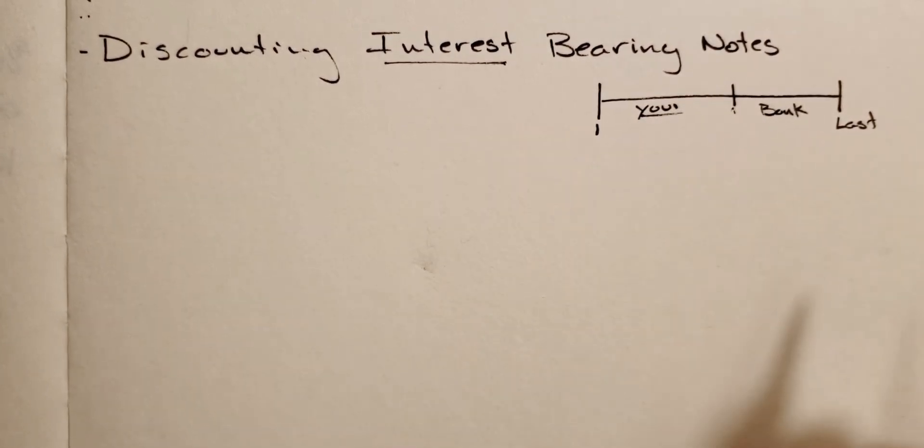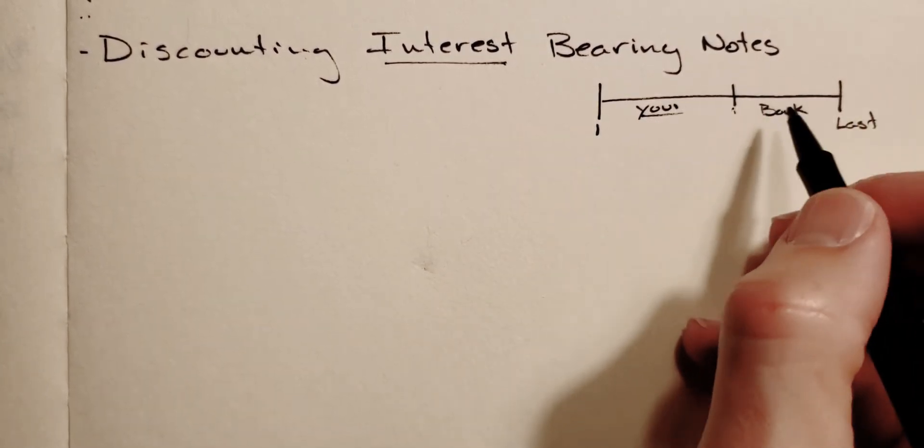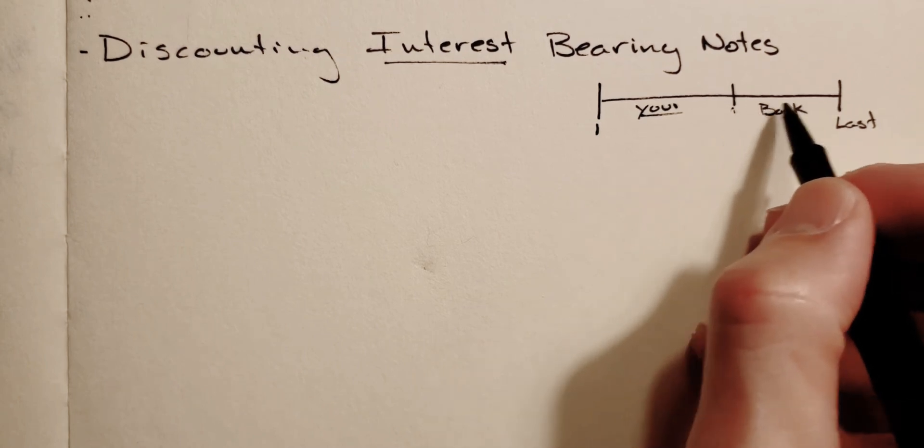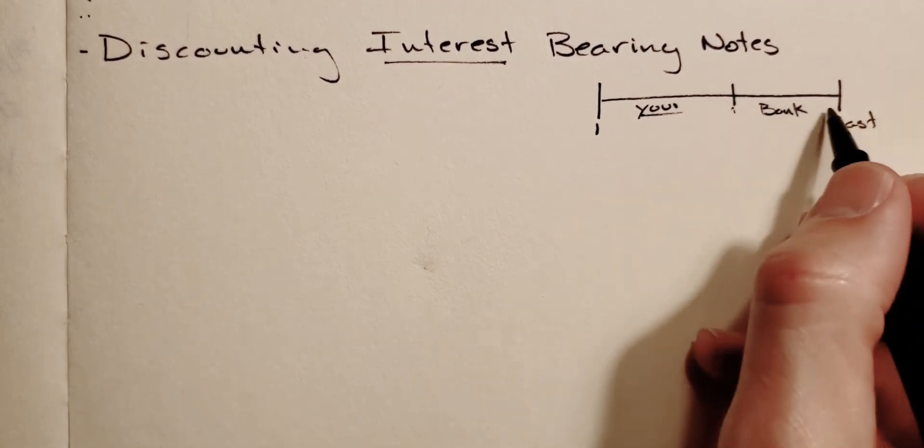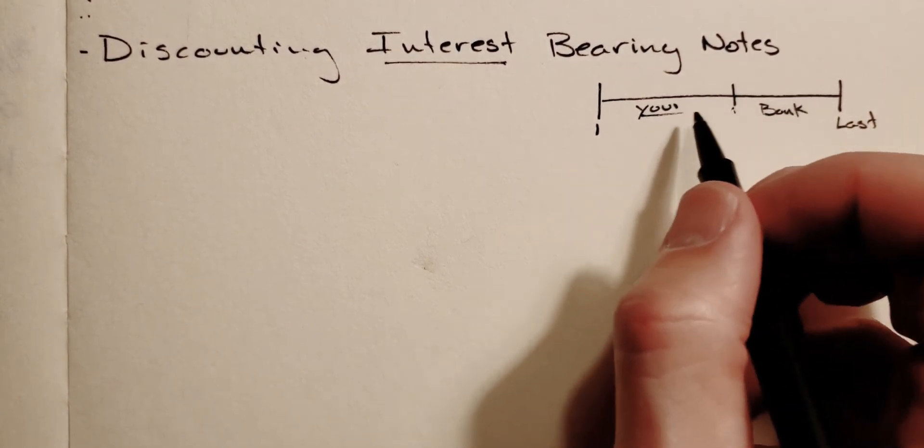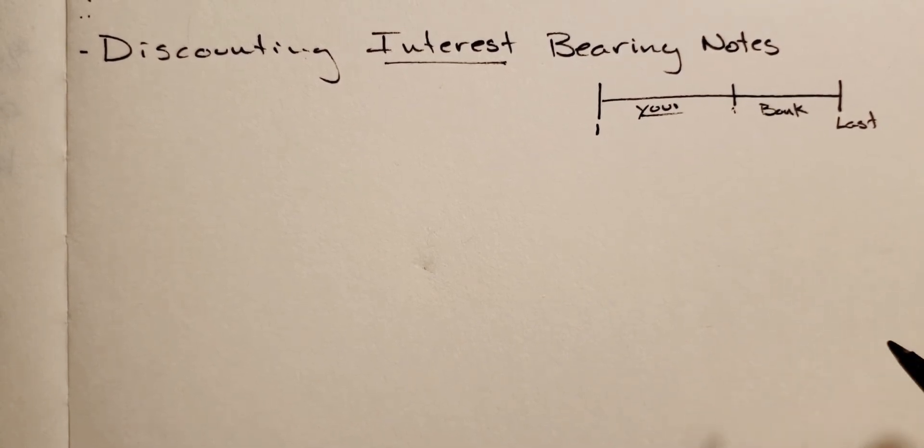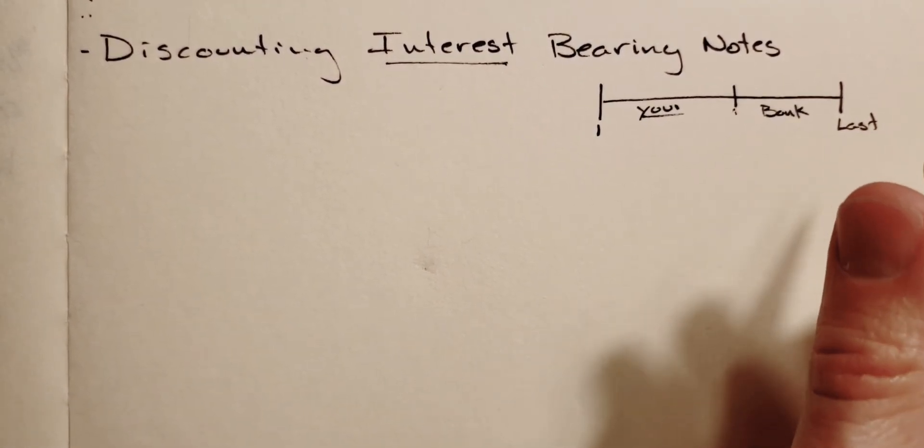The third step would be to calculate the bank discount, which is how much they charge for holding the note for this amount of time, and then the proceeds is what you take home. So an example of this would be if we take that first example from the notes.